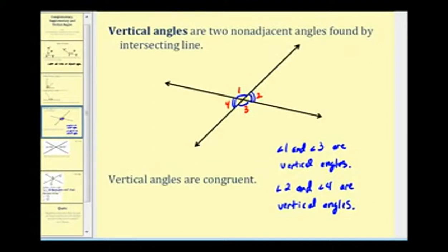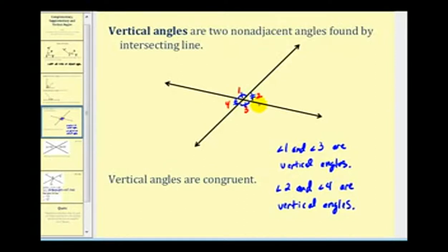Another way to show that two angles are equal in measure is to use hash marks or tick marks. To show angle one and angle three are congruent, put one arc for both and one hash mark through each arc. For angle two and angle four, use one arc but two hash marks through each arc to show those two angles are equal in measure.